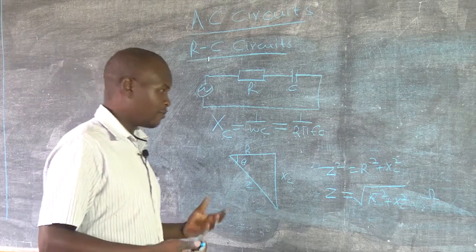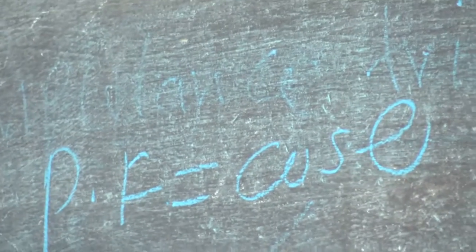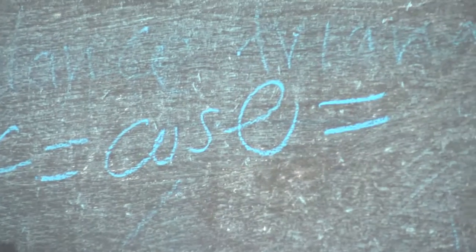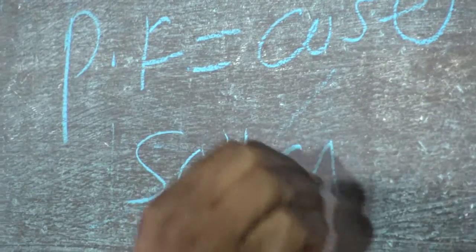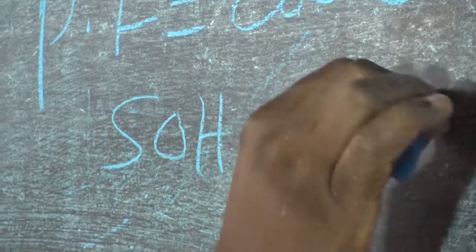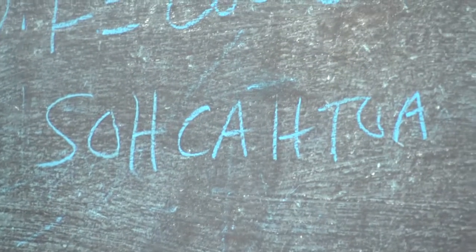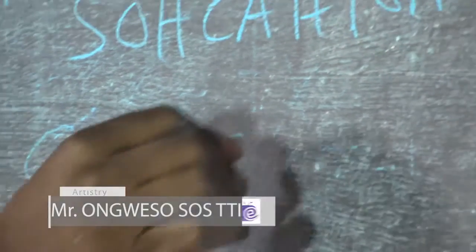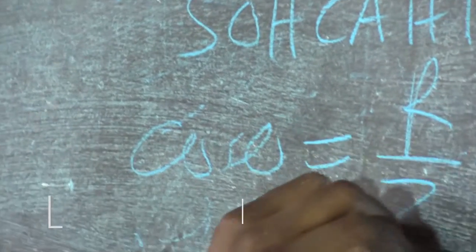At the same time, we can have the power factor. Power factor is given by cos theta. And the cos theta is given by when you use SOHCAHTOA. So cos theta is given by the adjacent over hypotenuse, R over Z. That's how we normally have the expression in that format.